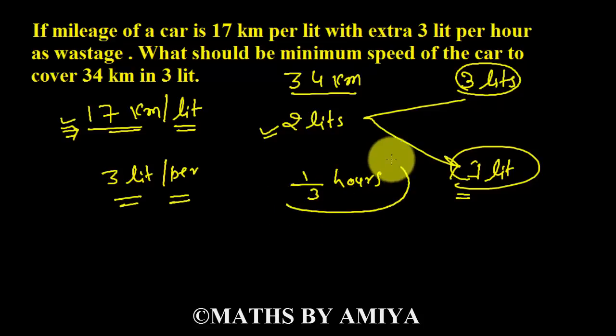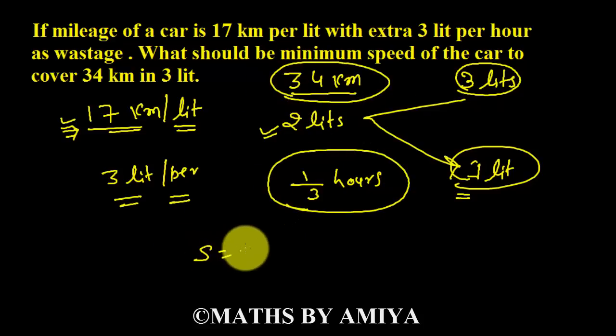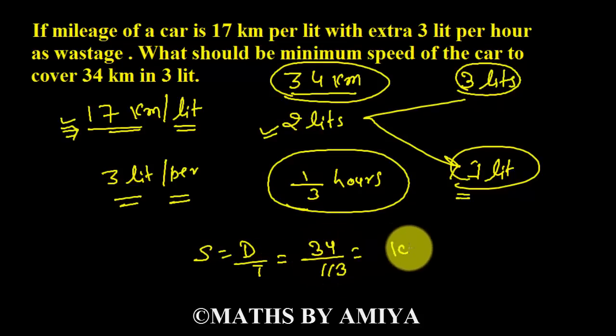So we find our time. Our time is 1 by 3 hours and our distance is 34 km. Speed is nothing but distance upon time, so our minimum speed is 34 upon 1 by 3, which is nothing but 102 km per hour.